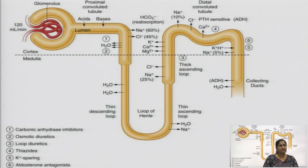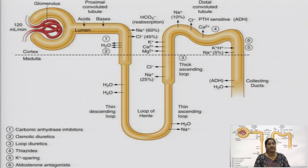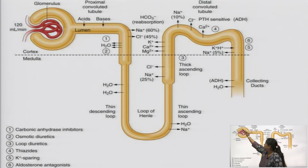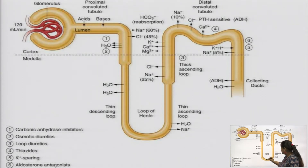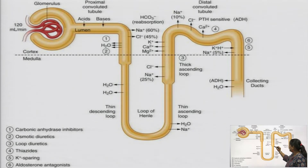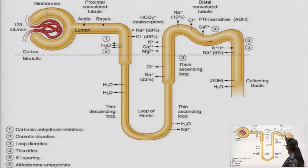Let us discuss the mechanism or site of action where these classes work. You can see the structure of the nephron. This is the glomerulus. This part is the proximal convoluted tubule. The thin part is called the thin descending loop of Henle, and going upward is the thin ascending loop of Henle. The thick part is the thick ascending loop. This part is the distal convoluted tubule, and at the last is the collecting duct.